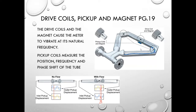The pickup coils measure the deflection — the magnitude of difference between the two of them and the frequency of oscillations — which gives us the phase shift. With no flow, the sine waves if overlaid would be equal. With flow, we get some phase shift. As velocity increases, you typically get more phase shift. As density increases, you tend to get more magnitude.